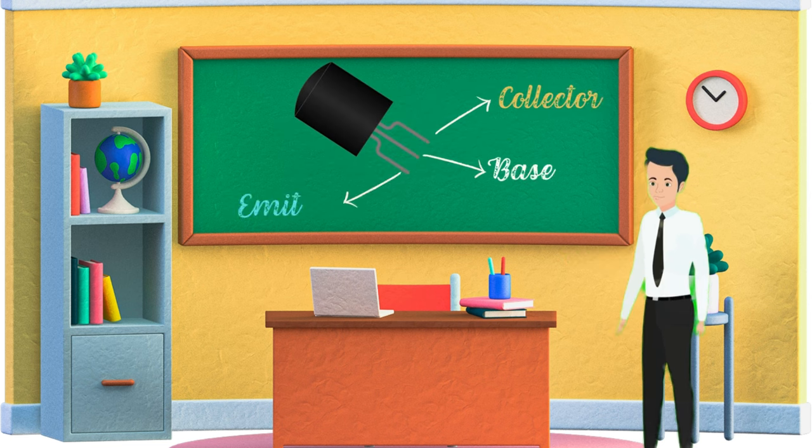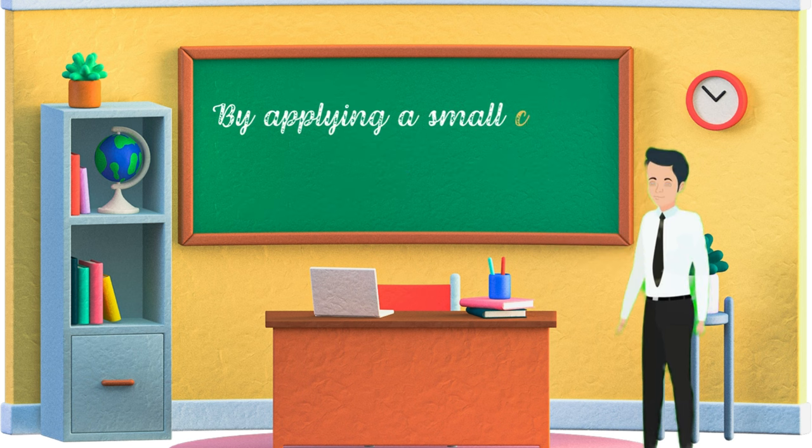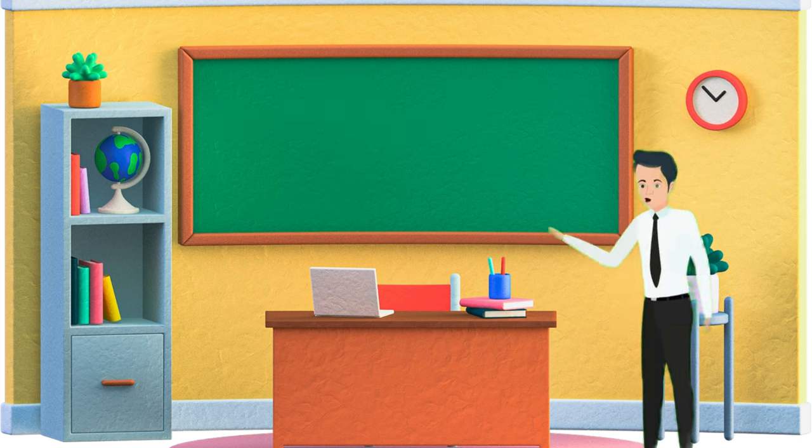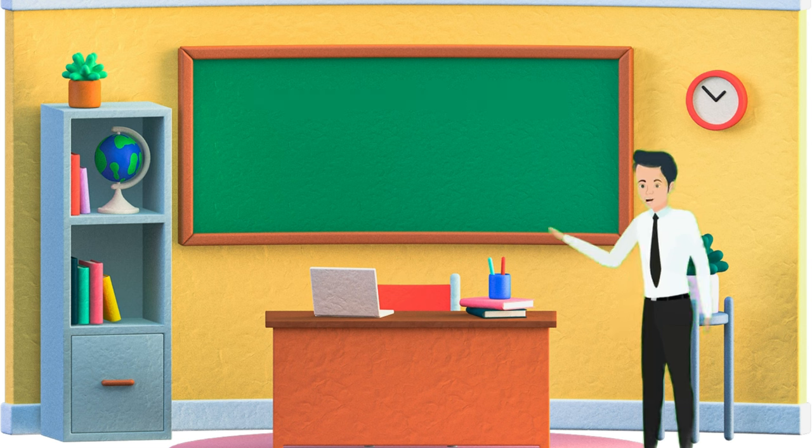The three layers form three terminals: the collector, the base, and the emitter. By applying a small current to the base, we can control a larger current flowing from the collector to the emitter.